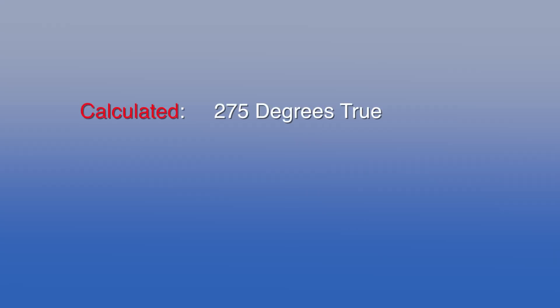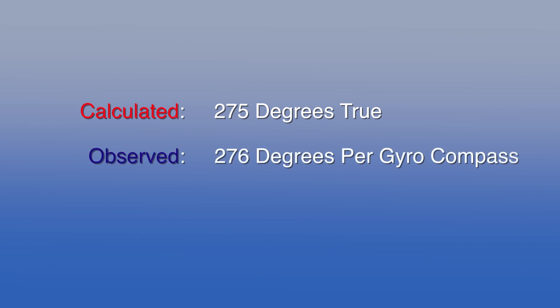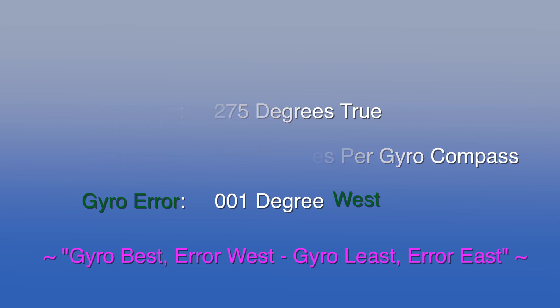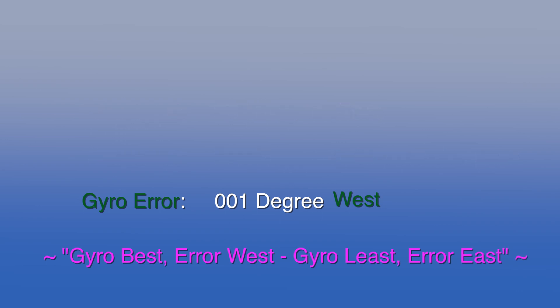As a quick example, if you calculated the bearing to sunset at 275 degrees true and then measured the bearing of the sun at sunset and came up with 276 degrees per gyro compass, then the gyro error would be one degree. But you also need to note the direction of error — it's either to the east or to the west. In this case the gyro compass is reading more than the calculated bearing, so the error is to the west. You can remember this by saying: gyro best, error west; gyro least, error east.